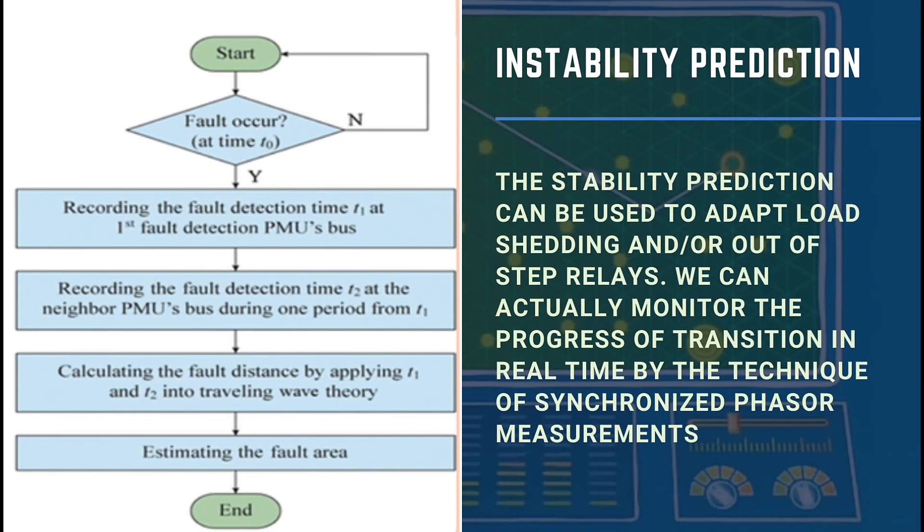Instability prediction: Instability prediction can be used to adapt load shedding and/or out-of-step relays. We can actually monitor the progress of transients in real time using the technique of synchronized phasor measurements.